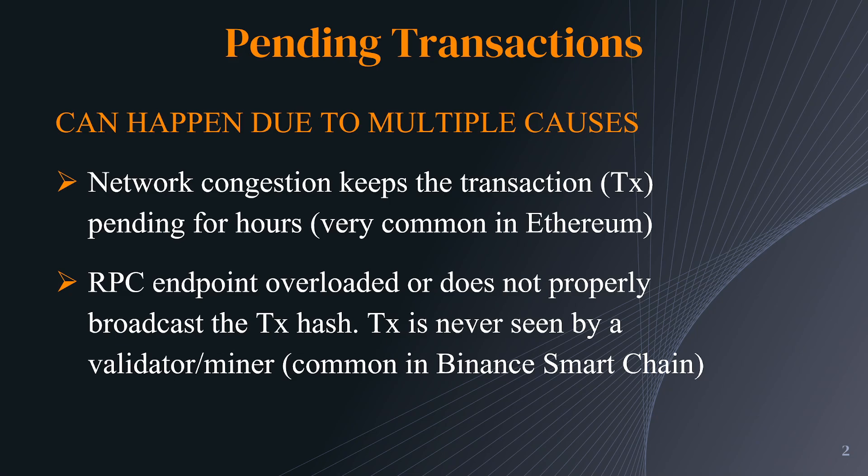Another common issue, if you use Binance Smart Chain a lot, is the RPC endpoint — which is something you configured when you first set up the network — can be overloaded with requests. This means the transaction is not broadcast properly. You look at MetaMask, it says pending; you go to the Explorer, look for the transaction hash, you don't see anything, and it just stays stuck.